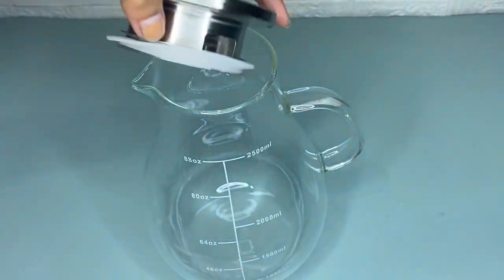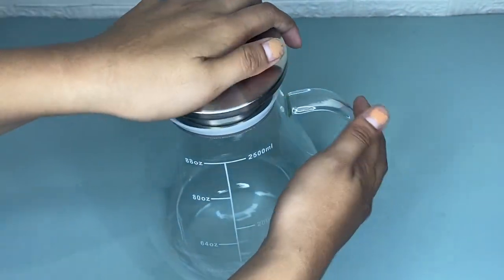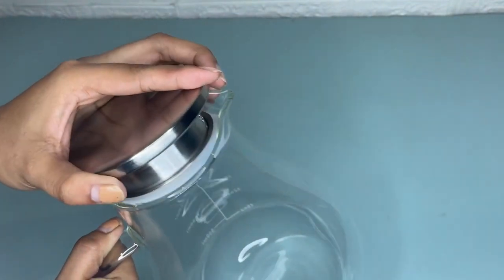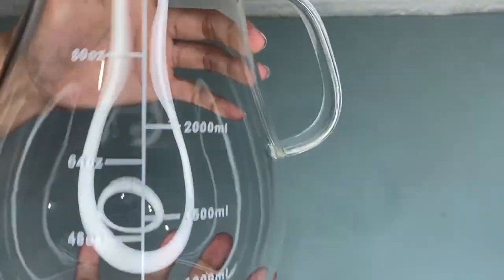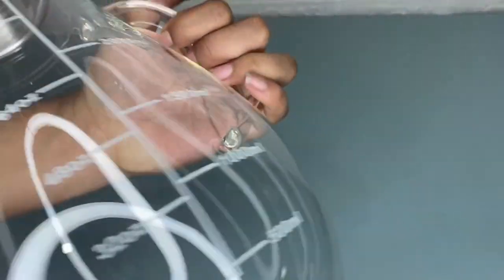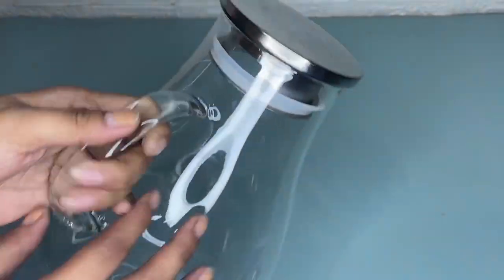This soft silicon seal keeps the lid firmly on to prevent leakage and it has a large diameter at the top that allows your hands to easily reach the bottom, which is convenient for cleaning the inside of this water tank.